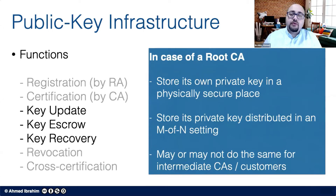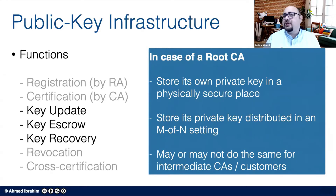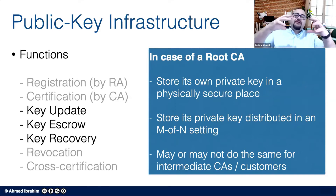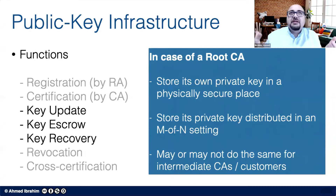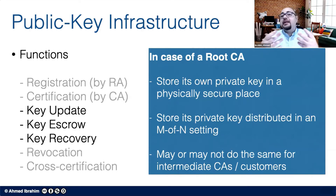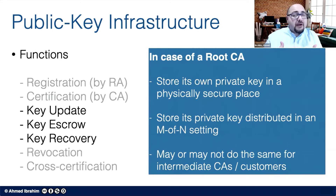What about key escrow? There are many factors that lead people to think they may need to escrow a key somewhere so it can be accessed in the future if something goes wrong. Especially for root CAs — the big ones that certify other CAs, which in turn issue certificates for individuals, organizations, and businesses. In the case of a root CA, one option is to store its private key in a physical secure place. You put it in a location with a lot of security, not easy for anybody to access, and not in any electronic format, making it very hard for that private key to be compromised.